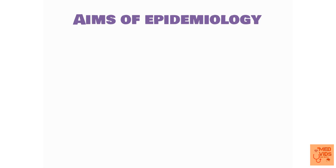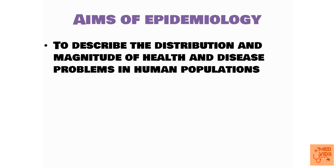Now let's talk about the aims of epidemiology. There are three main aims. The first aim is to describe the distribution and magnitude of health and disease problems in human populations. By carrying out studies in the population, we identify the distribution and magnitude of health and disease problems, giving us an idea of the important diseases in that community and the groups of people affected, which tells us about the health of that particular population.